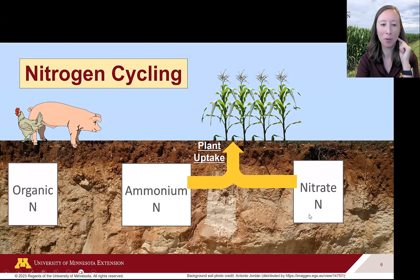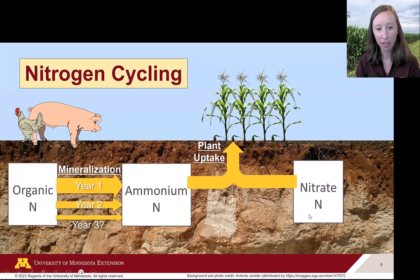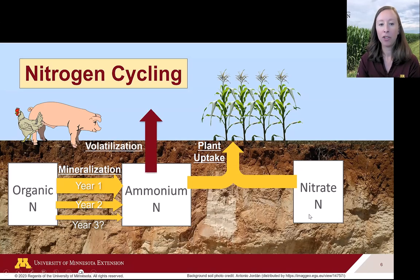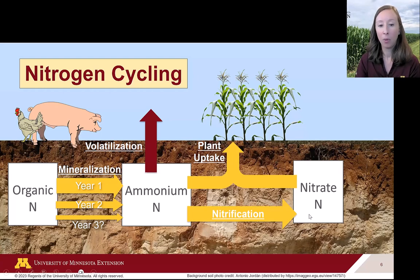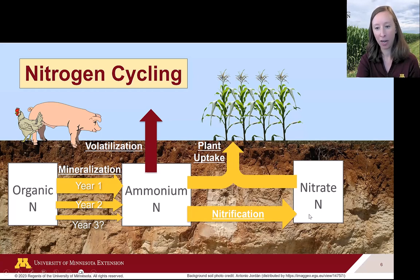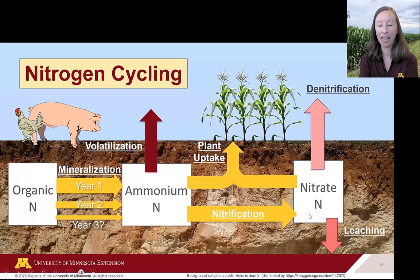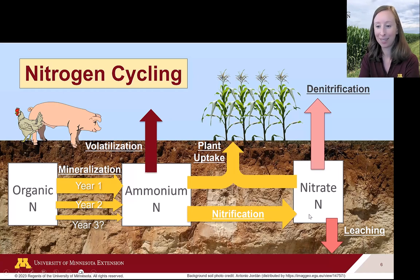In nitrogen cycling in soil, organic nitrogen goes through a process called mineralization, which takes a few years to convert organic nitrogen over to ammonium nitrogen. With ammonium nitrogen we worry about gaseous losses through volatilization, where ammonium turns into ammonia gas and is lost to the atmosphere. Ammonium also transforms into nitrate nitrogen through a process called nitrification, done by bacteria in the soil. Nitrate can be lost as a gas through denitrification in saturated soils, or through leaching where water carries nitrate deeper into the soil profile beyond the roots.